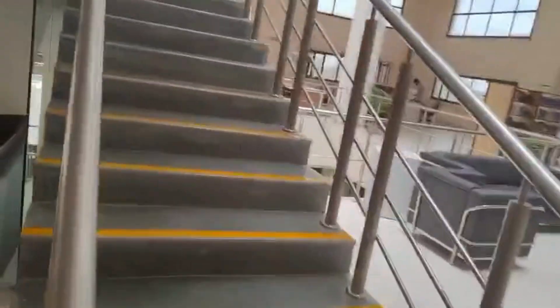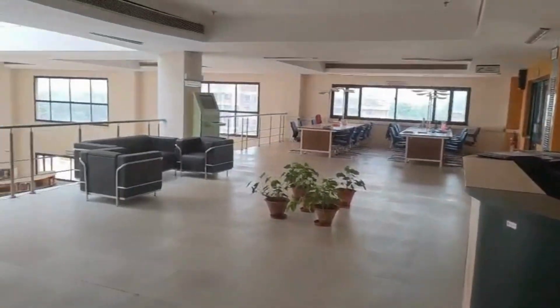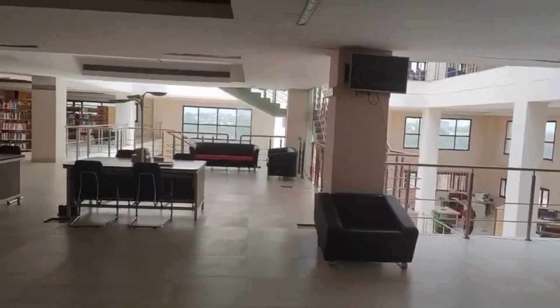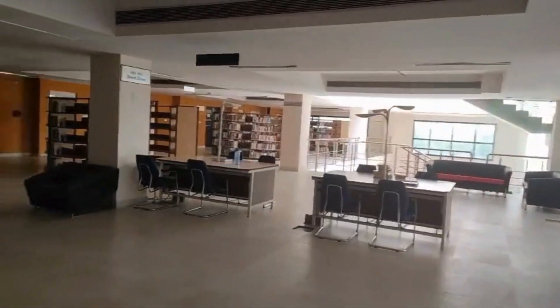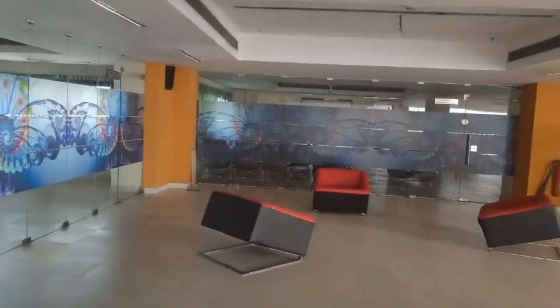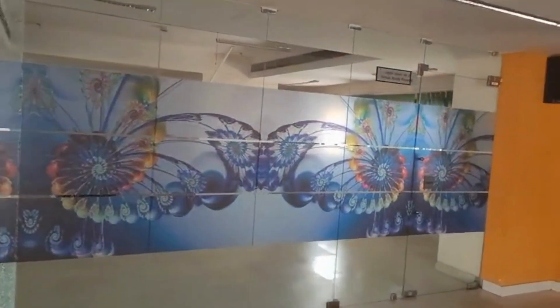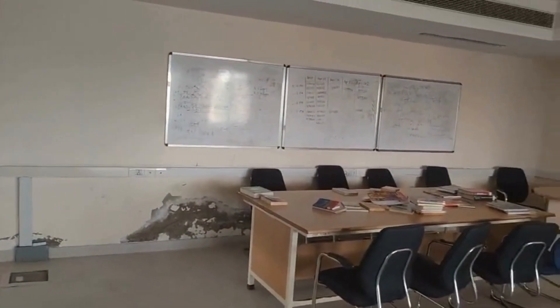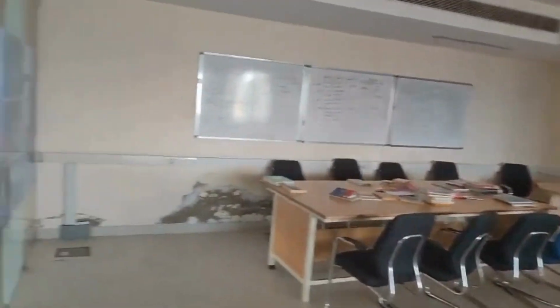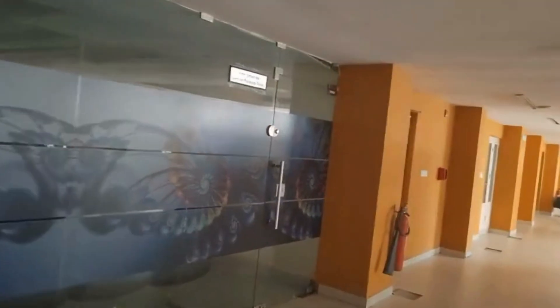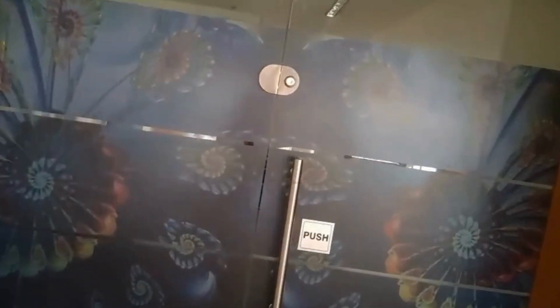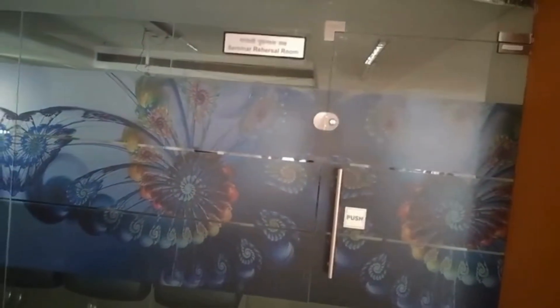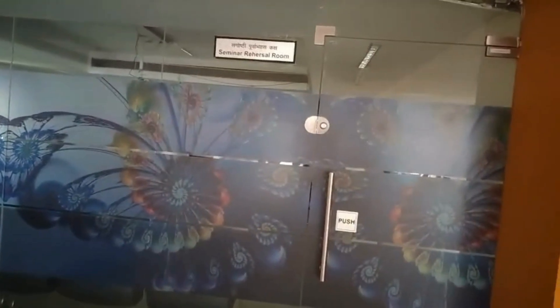Let's move to the fifth level. This is the fifth floor — it's almost the same as the fourth floor. There are two rooms: one is again a group study room with whiteboards, and the other is a seminar rehearsal room which you have to book. PhD and thesis students give seminars here, and if you are part of a club and want to give a seminar, you can have your rehearsal here using the projector and the board.